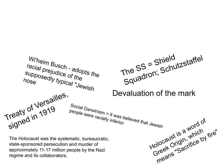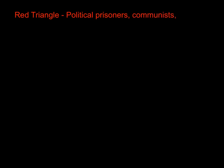We also learned about the various different color triangles. The red triangle was for political prisoners — communists, anyone to do with politics of any kind, social democrats, freemasons, anarchists.